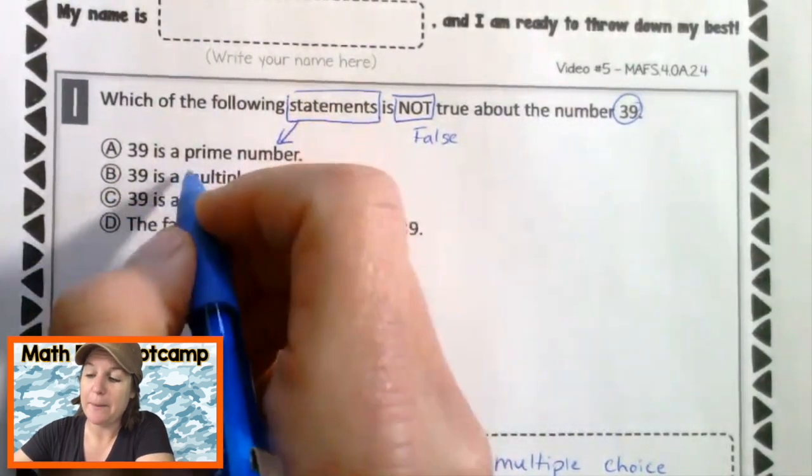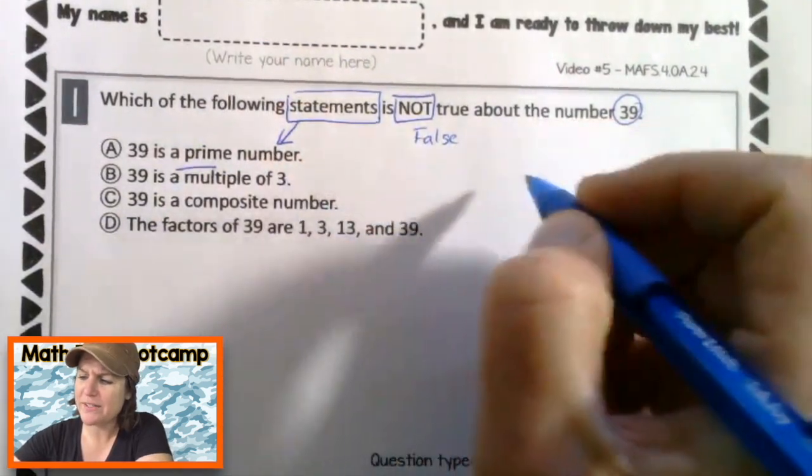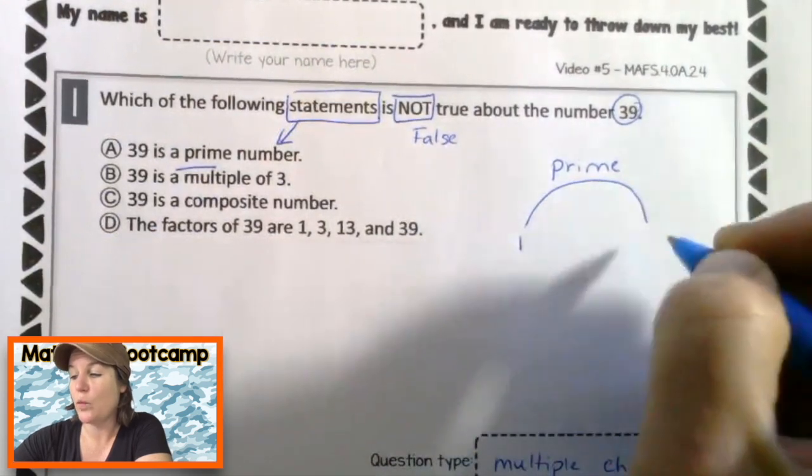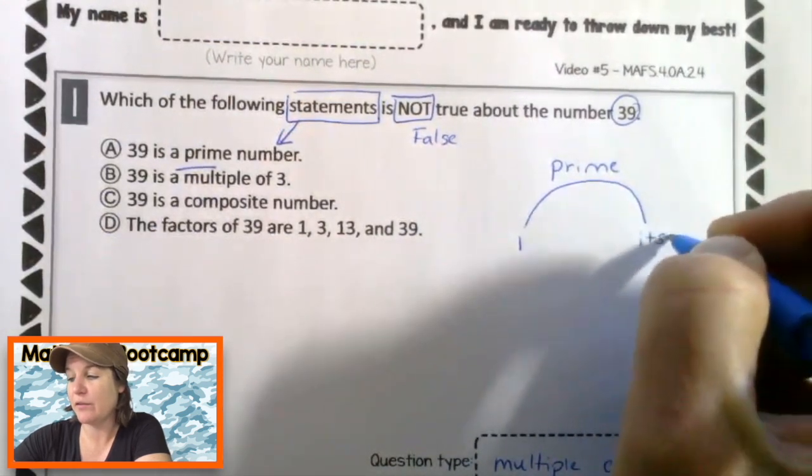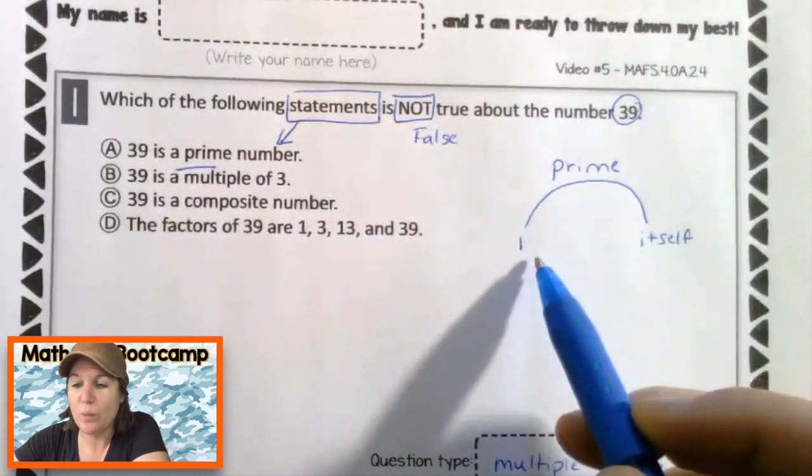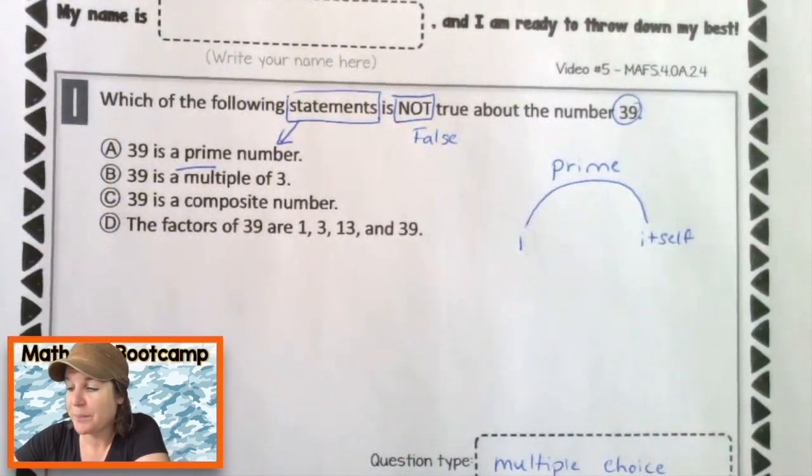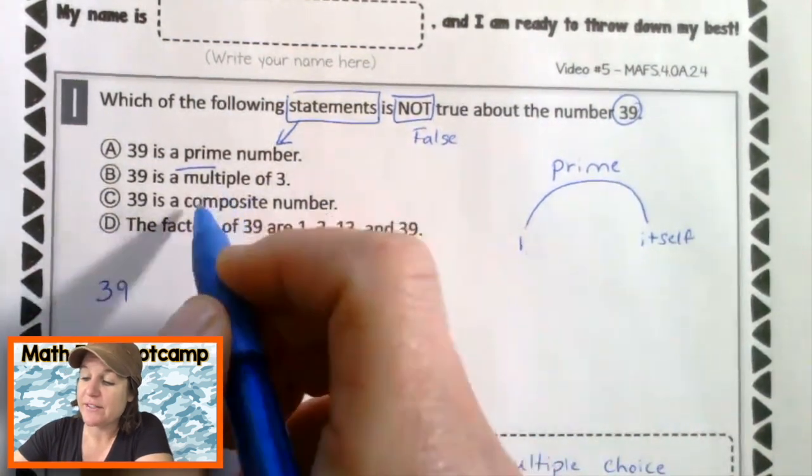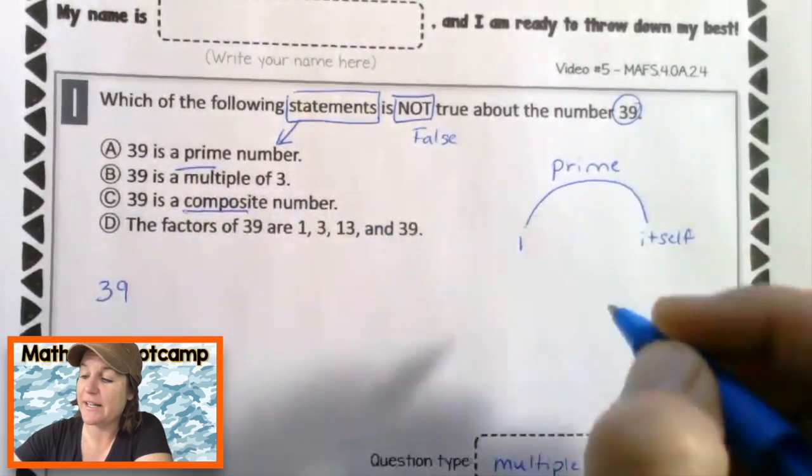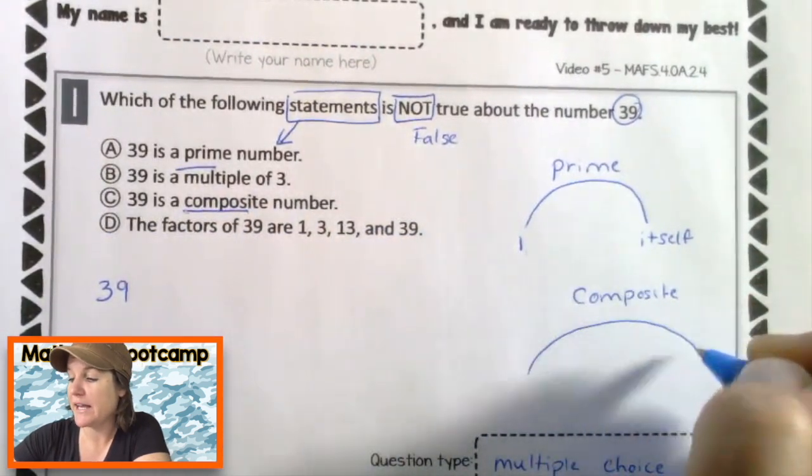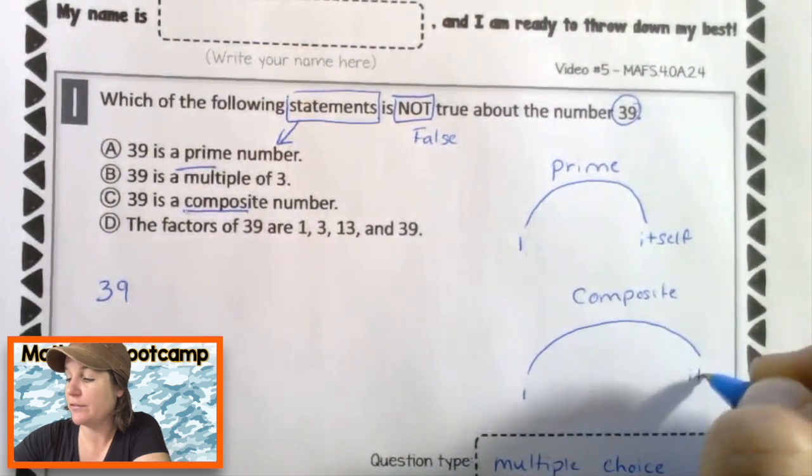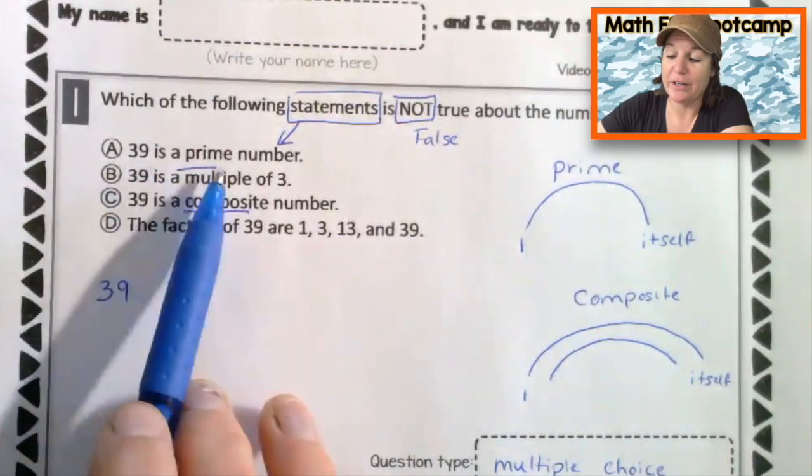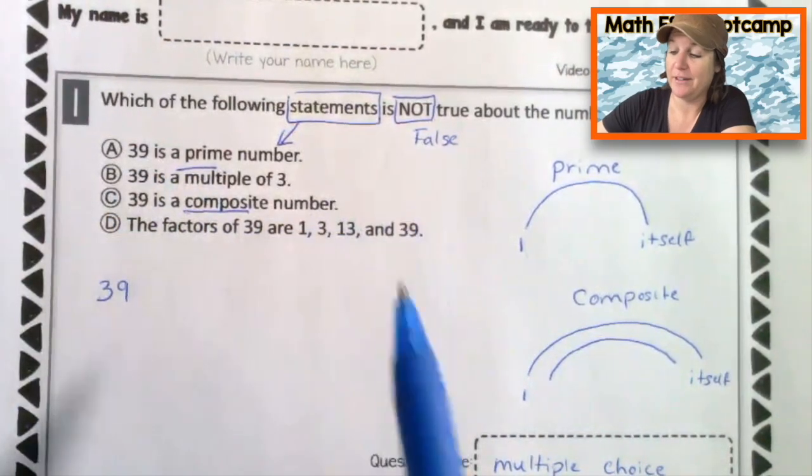39 is a prime number. Well, what does prime mean? Prime means that it only has a factor of one and itself. This is what I like to call a factor rainbow. Let's take a look at number 39 and see if it's prime. Composite means that it has one and itself and more. This will help us determine whether A or C is right.